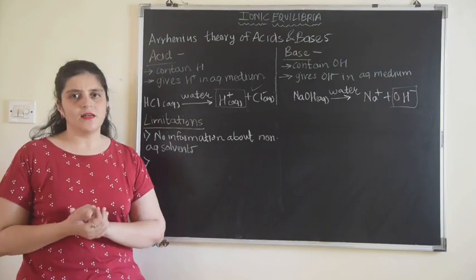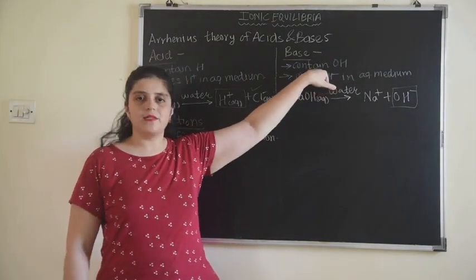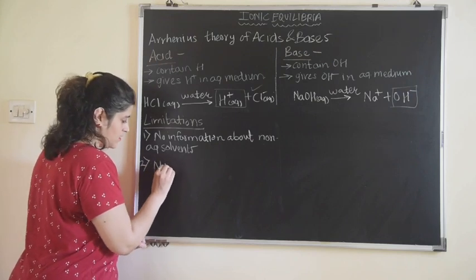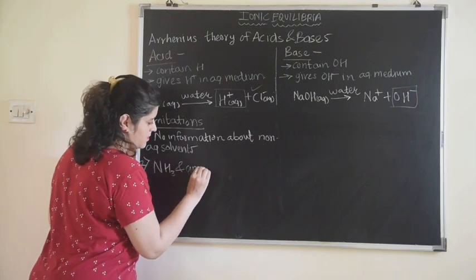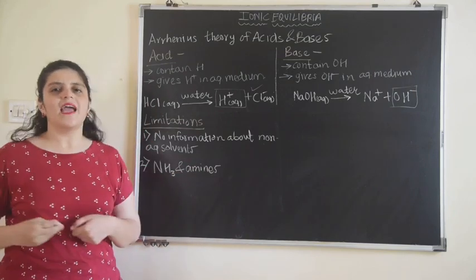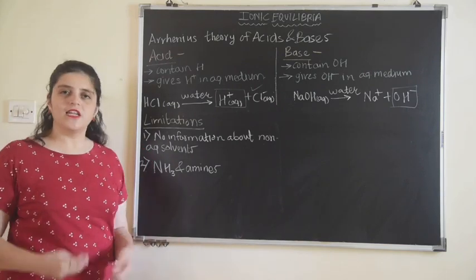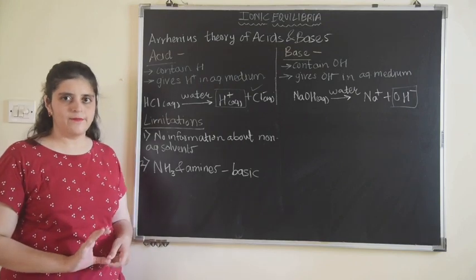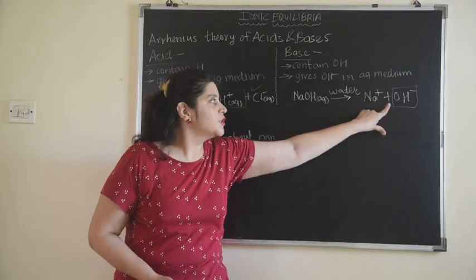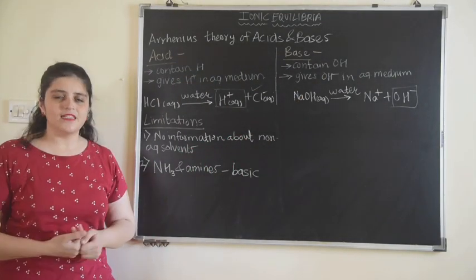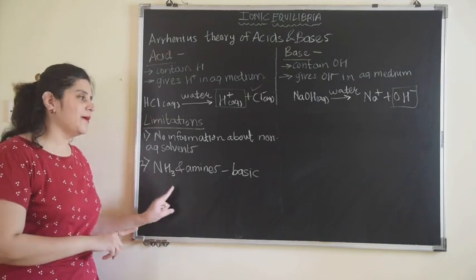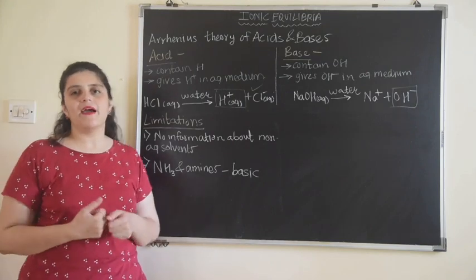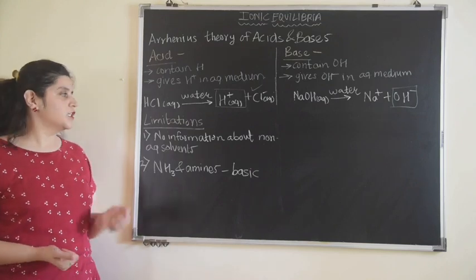The second limitation is: we say that a base is a substance that gives OH⁻ when dissolved in water. But there are certain substances like NH₃ and amines that are basic in nature — we all know that. But NH₃ does not contain OH and does not give OH⁻ directly. So from where will it release OH⁻? But still it is basic. This is a limitation — the basic nature of NH₃ and amines is not explained by Arrhenius theory.